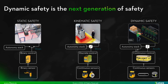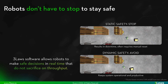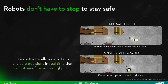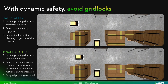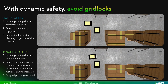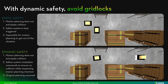Dynamic safety systems are the most advanced type of safety system. Rather than just slowing down or stopping, these systems can turn and avoid obstacles in real time. This has the lowest impact on performance as it keeps the robot in motion. Robots don't have to stop to stay safe. In this example of dynamic safety versus kinematic safety, we show the safety system avoiding the human rather than just slowing down and stopping in front of it. This is especially valuable in multi-robot scenarios where gridlocks commonly result in downtime. The dynamic safety system running on both robots is able to prevent a safety incident while enabling both robots to reach the goal.